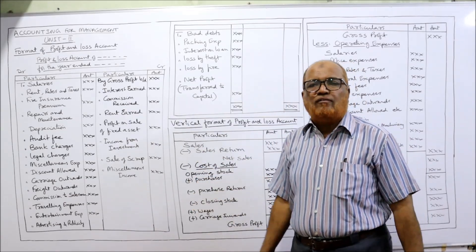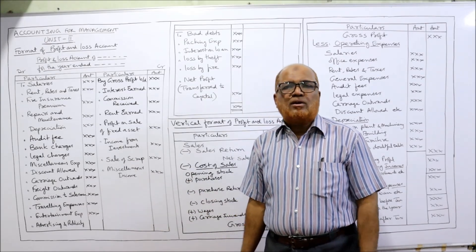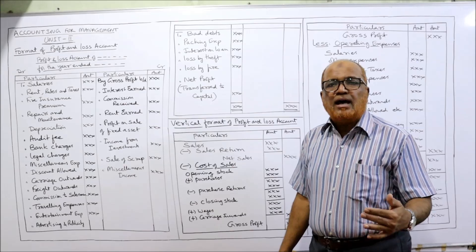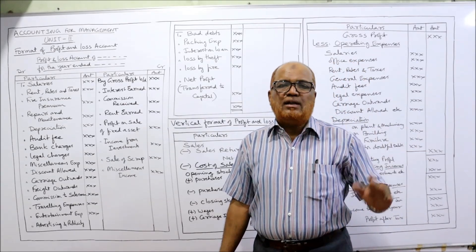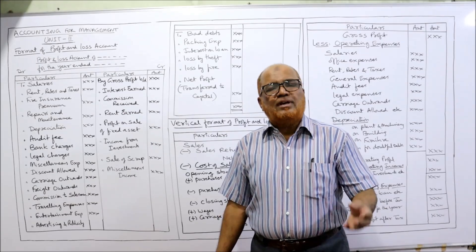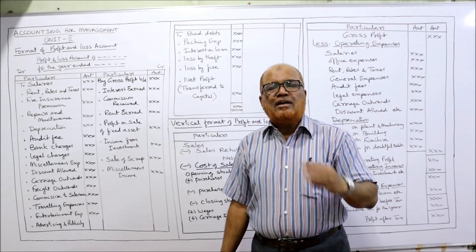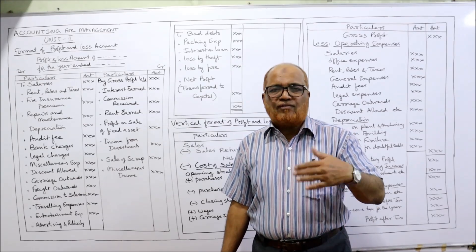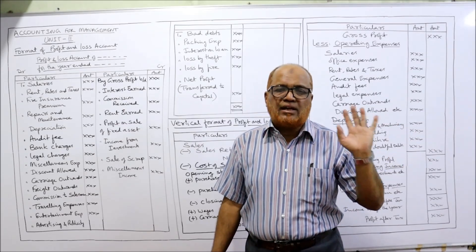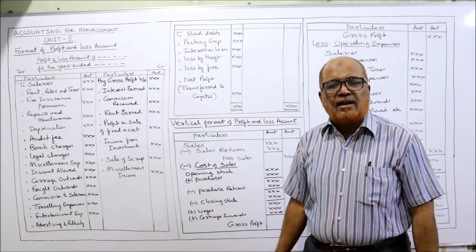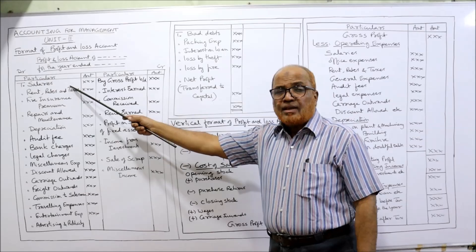Further examples of other income on the credit side include income from investment, sale of scrap, and miscellaneous income. On the debit side we take operating expenses, also called indirect expenses. Direct expenses have already been taken in the trading account — purchases, wages, direct expenses, freight, carriage inward — all those are already in the trading account. All remaining indirect expenses are debited to the profit and loss account.